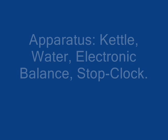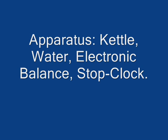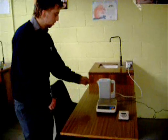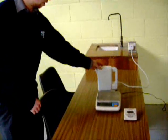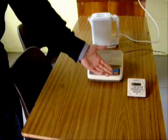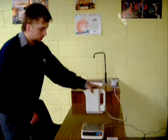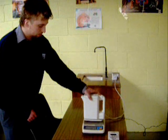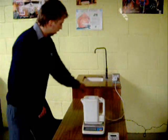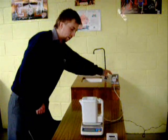The aim is to estimate the specific latent heat of vaporization of water. The apparatus we will use is a kettle of water, an electronic balance, and a stop clock. I have the kettle of water on the scales and then switch the power on.